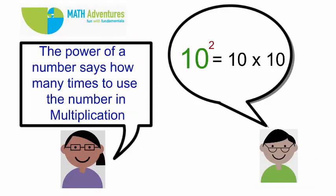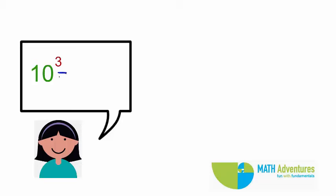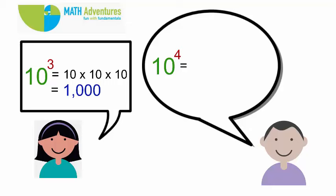So 10 to the power 2, or 10 squared, is equal to 10 into 10, which is 100. 10 cubed is equal to 10 into 10 into 10, which is 1000. 10 to the power 4 is equal to 10 into 10 into 10 into 10, which is 10,000.